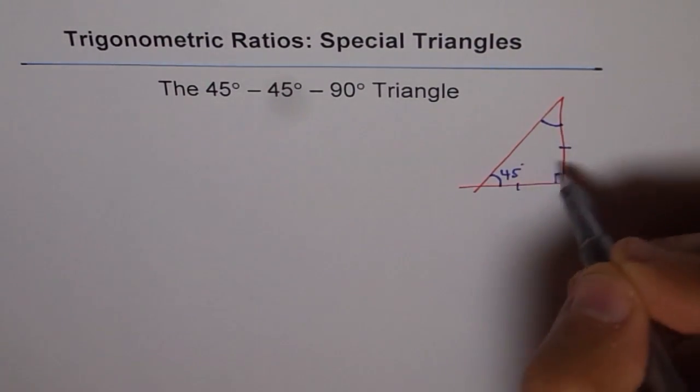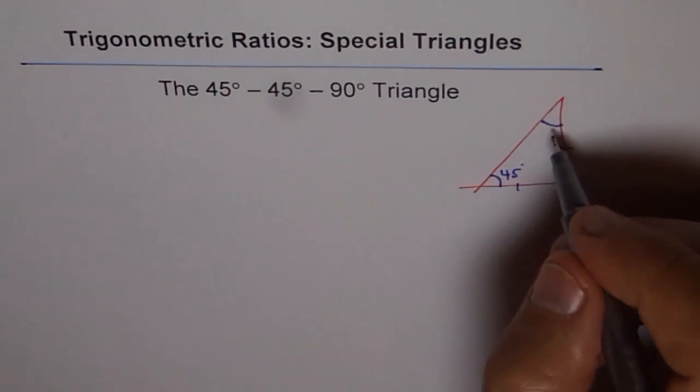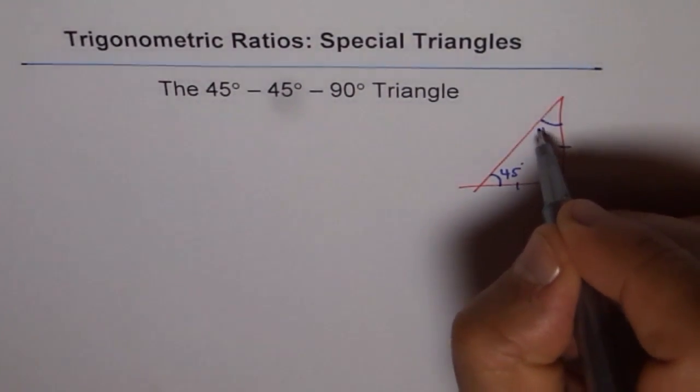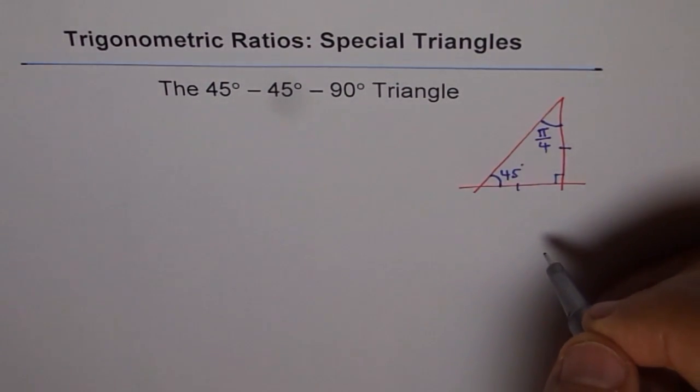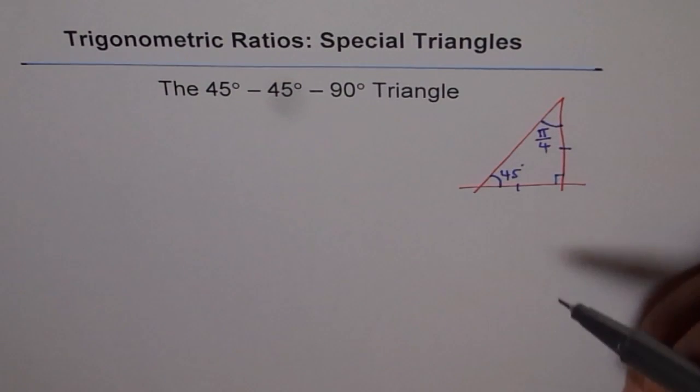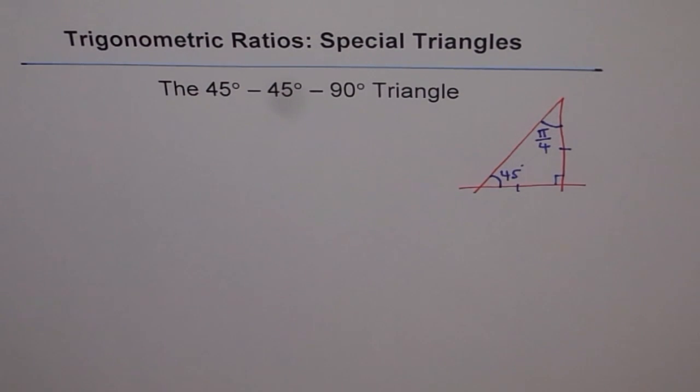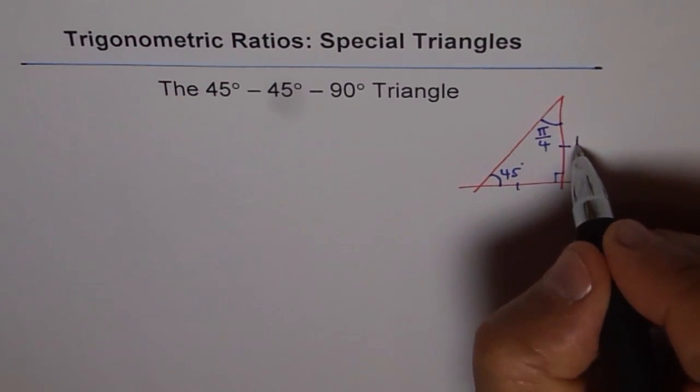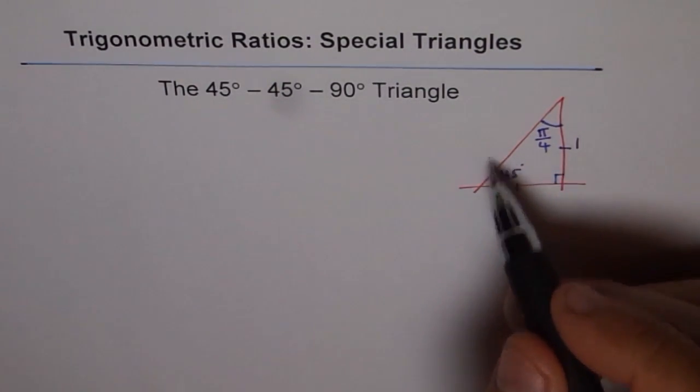In that case the angle here will be 45 degrees and this will also be 45 degrees. Angles opposite equal sides are always equal. 45 degrees in radians I can write as pi by 4. I'm doing so because some of my students are using radians and others are using degrees, so it works for both.